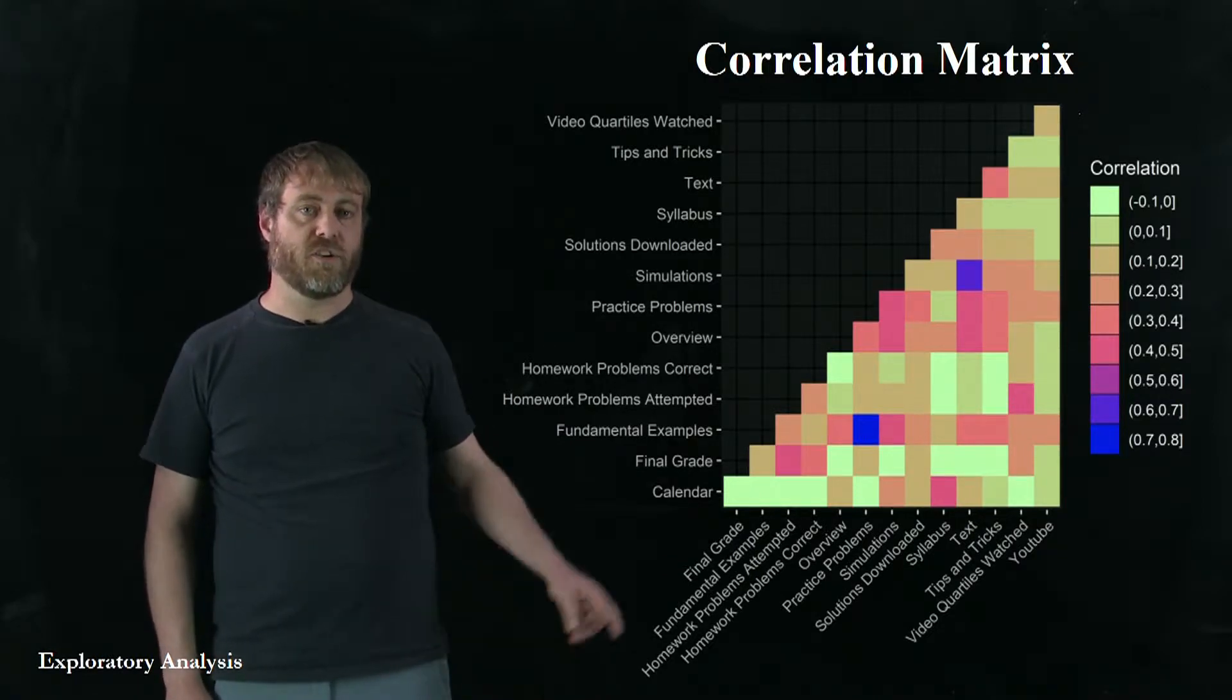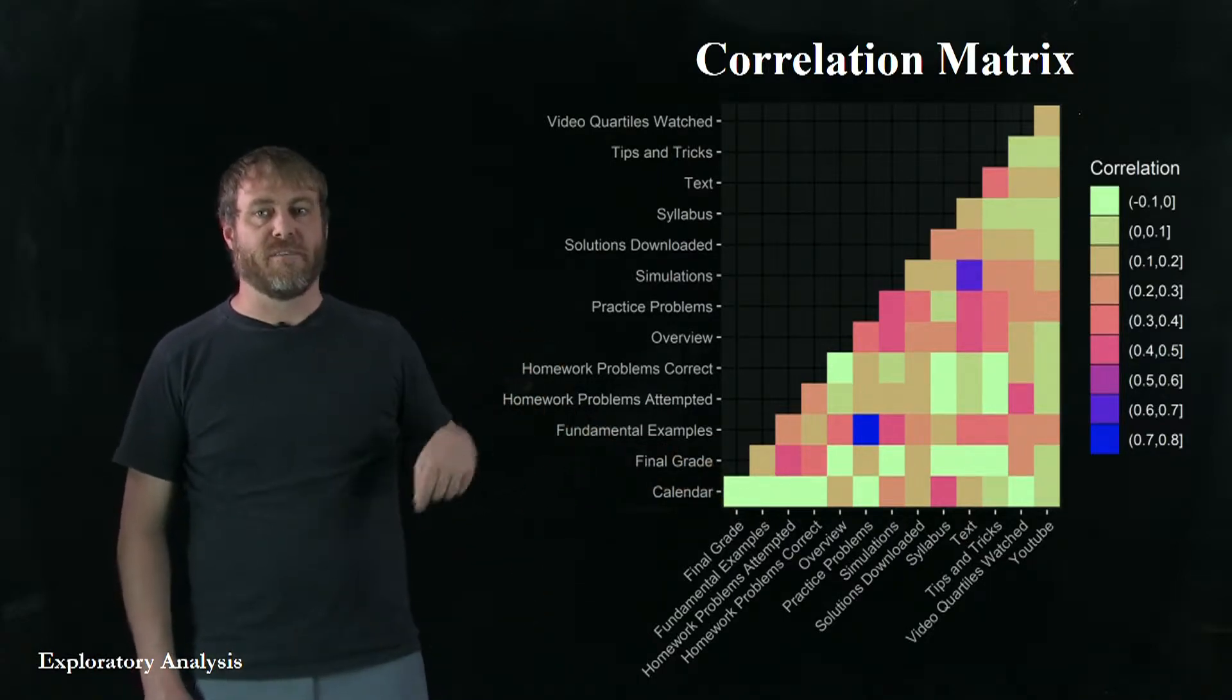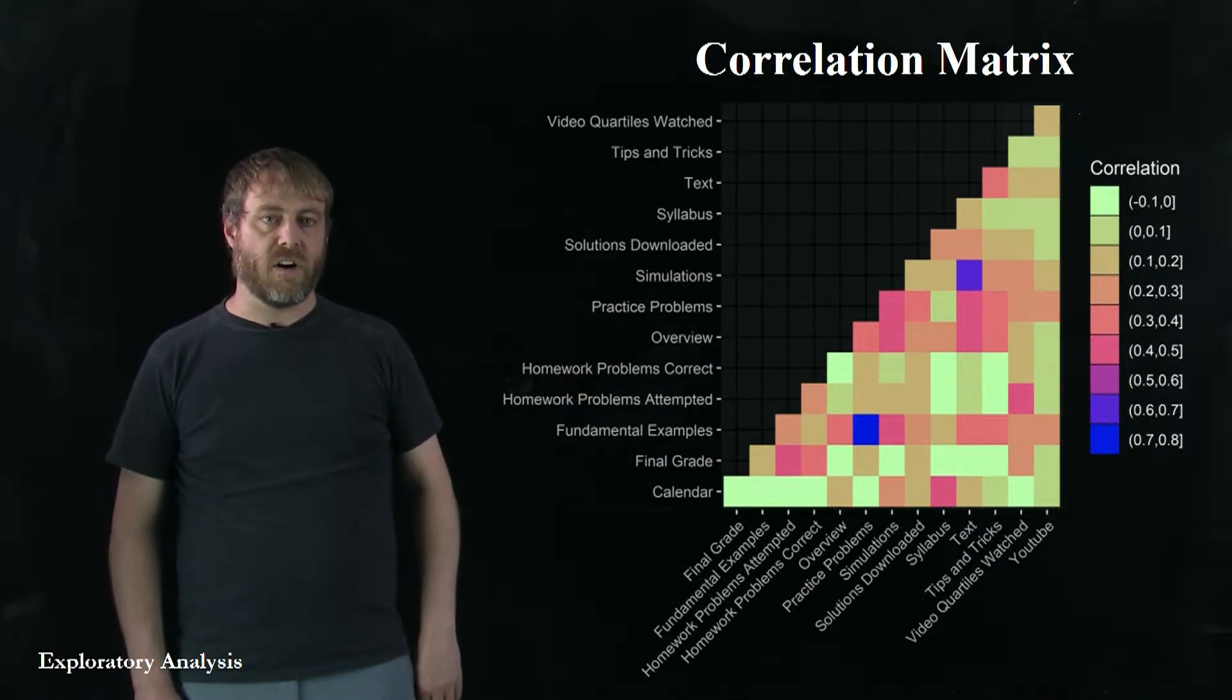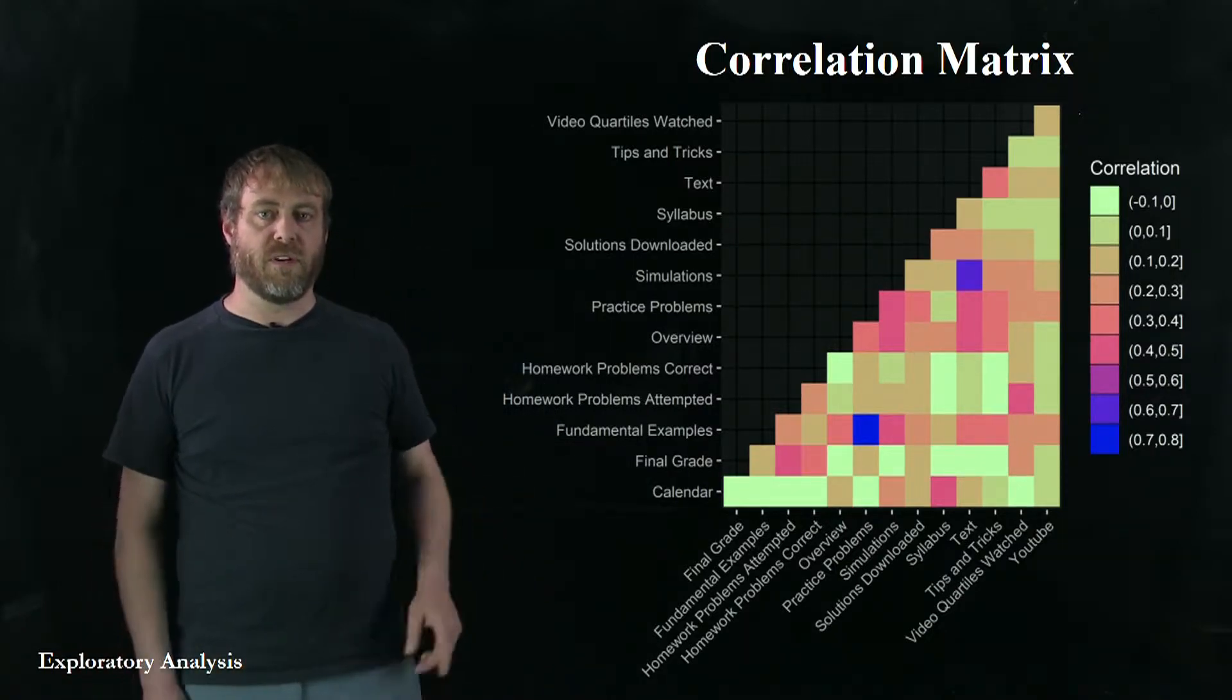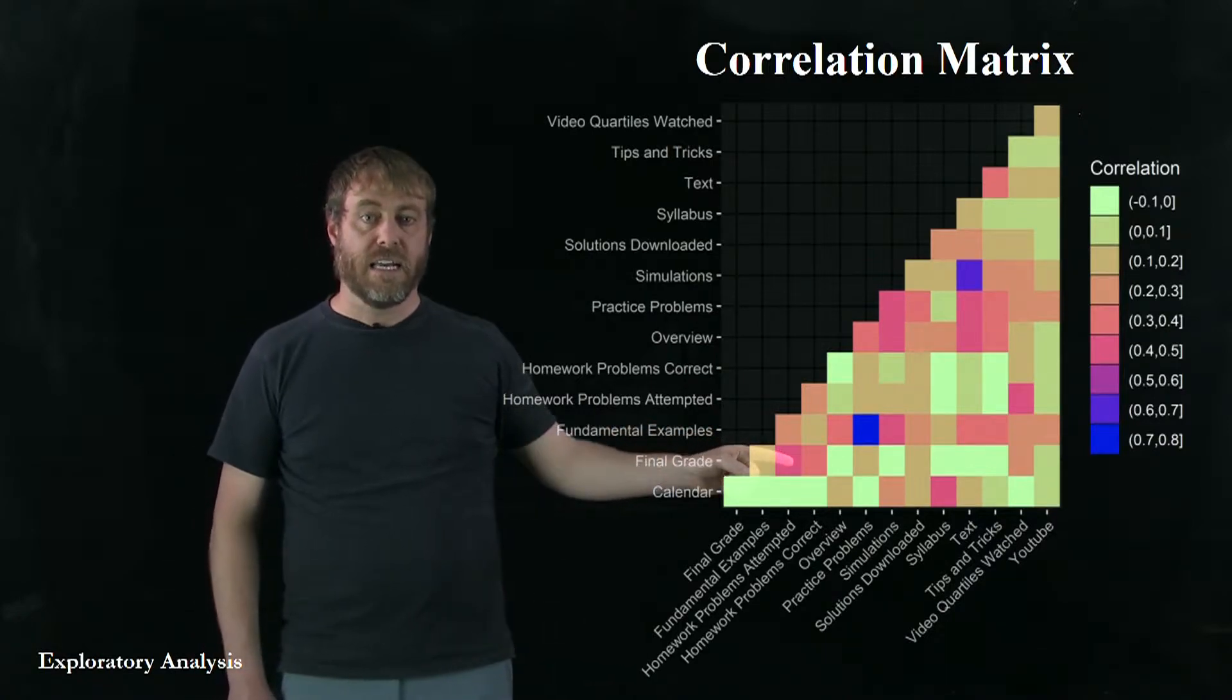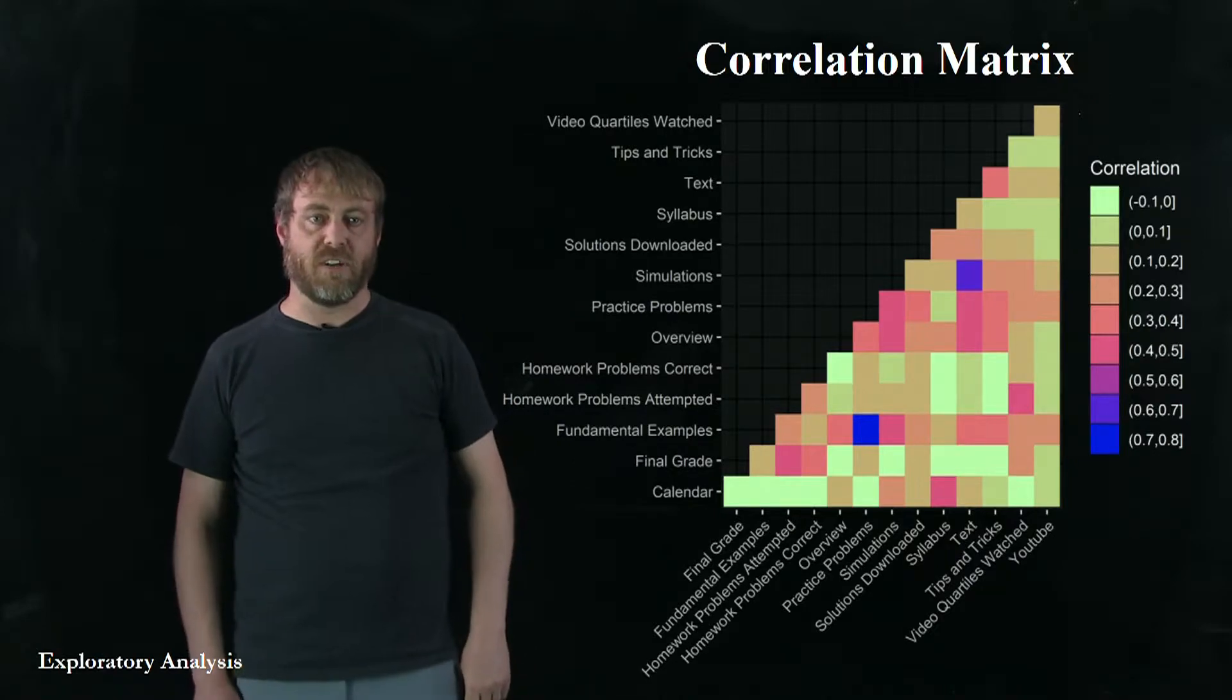There are some things that correlate extremely well, like fundamental examples and practice problems. Now that's actually a little misleading. You have to go to fundamentals to get to the practice problems, so that's a path dependency there. But the rest of them are true correlations. Now for this work, we're really just interested in the final grade. What actually correlated with final grade? We see three things that tend to do that well. One is attempting problems on homework, getting problems correct, and then actually video quartiles watched of the pre-lecture videos. All of those were correlated with your final grade.